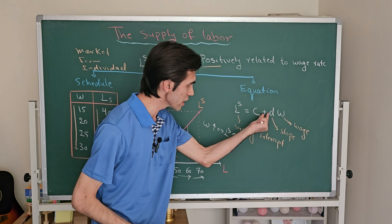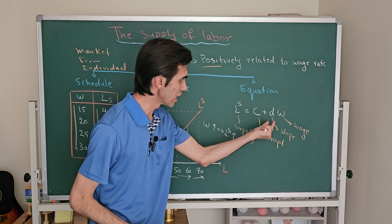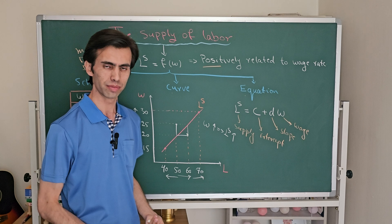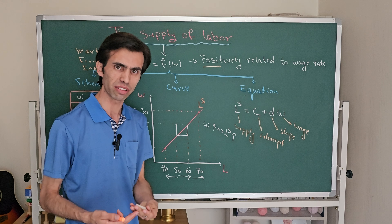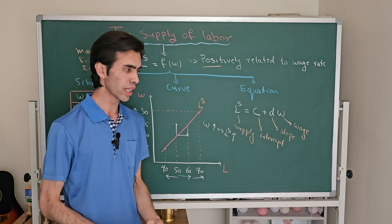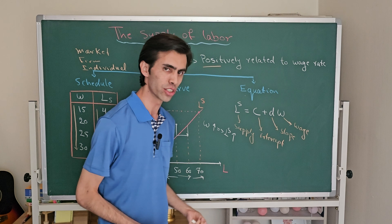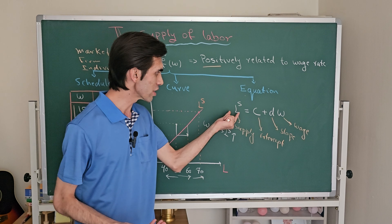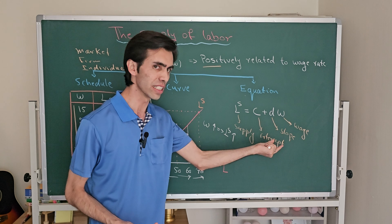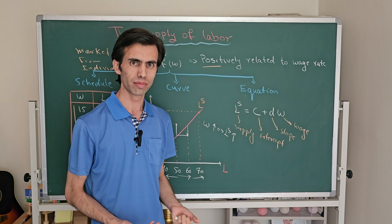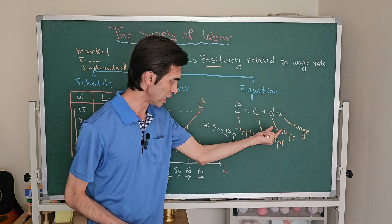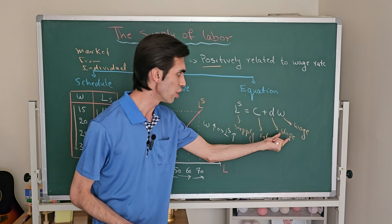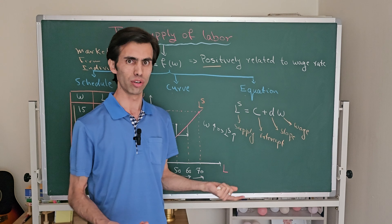The positive sign means that the relationship between wage and labor supply is positive — labor supply is positively related to the wage rate. D is the slope; it shows that when the wage rate increases by one unit, the labor supply would increase by the value of the slope, by the value of d.